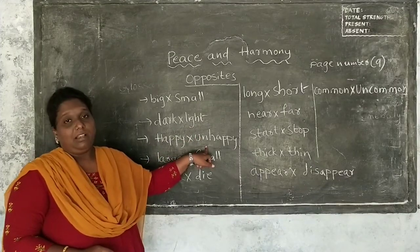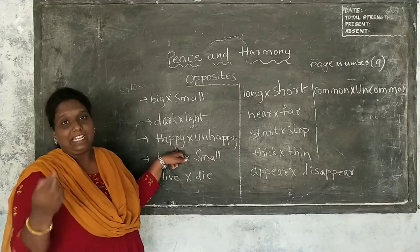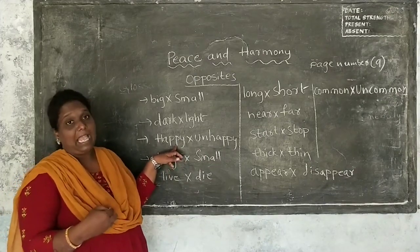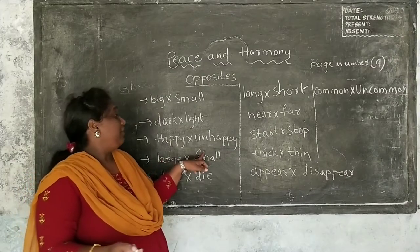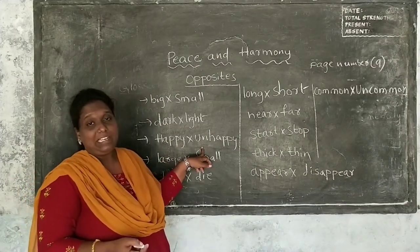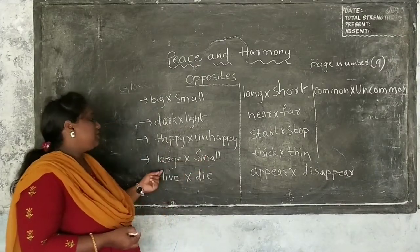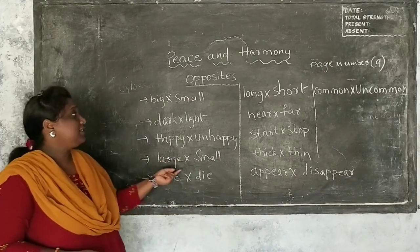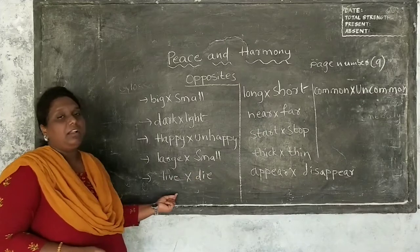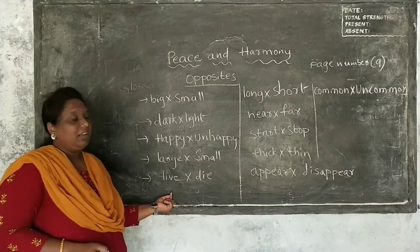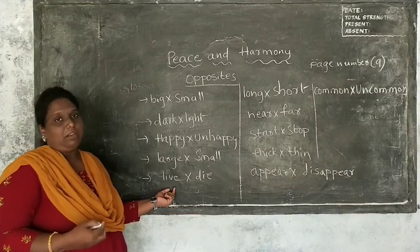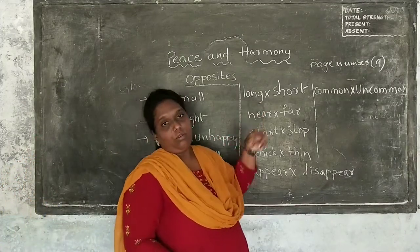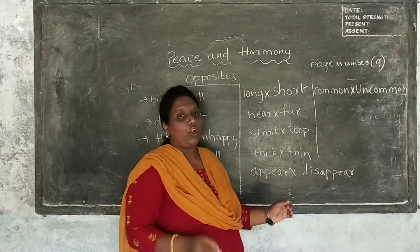We feel happy when we get anything we want. If we lose anything, then we immediately feel sad or unhappy. Next: large — a huge thing. Large, small. Live, die — so live and then life. Long, short — long means chala potukko, and short means chin.